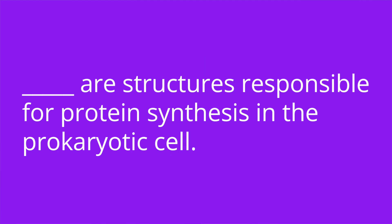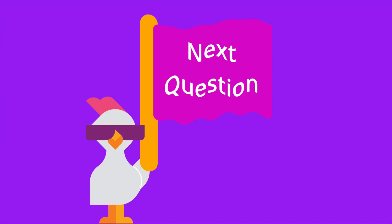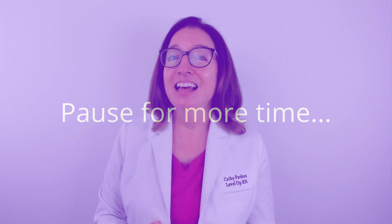Number three: blank are structures responsible for protein synthesis in the prokaryotic cell. The answer is ribosomes. Number four: blank is a dormant structure that protects the bacterial genome when environmental conditions become unfavorable. The answer is an endospore.